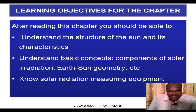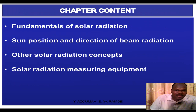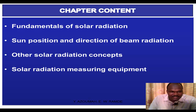The learning objectives of the chapter are in three points. Number one, to understand the structure of the sun and its characteristics. Number two, to understand the basic concepts of solar irradiation, the solar resources, the components of the solar irradiation, the earth-sun geometry, etc. And to know solar radiation measuring equipment. The outline of the chapter covers: fundamentals of solar irradiation, the sun position and direction of beam radiation, other solar radiation concepts, and solar radiation measuring equipment.